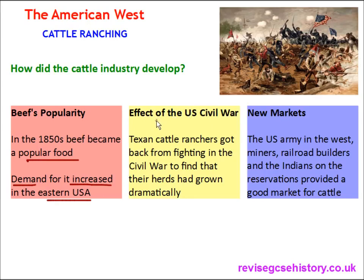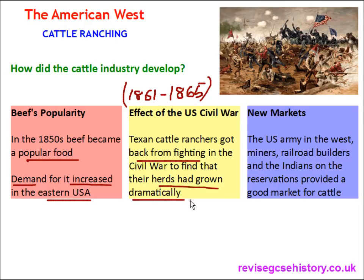Another factor that affected the development of the cattle industry was the US Civil War, which began in 1861 and ended in 1865. Texan cattle ranchers got back from fighting in the Civil War to find that their herds had grown dramatically. They returned extremely surprised because their herds had rapidly increased in size — they went away with not too many cows and returned to find absolutely loads. This is a pretty important factor because the supply of beef increased just as it was becoming a popular food.